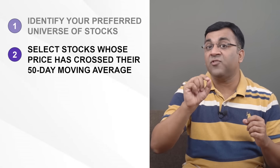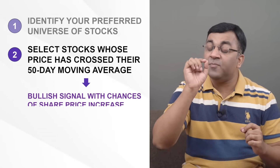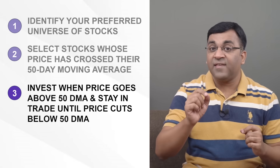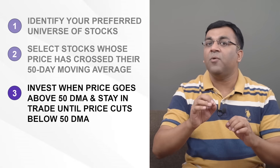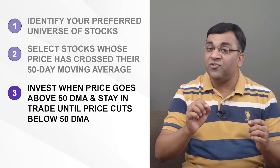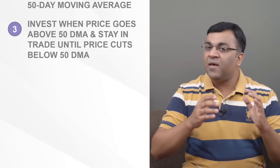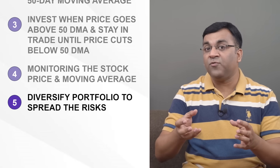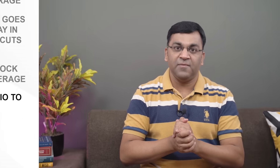Step two is to look for stocks whose price has just crossed their 50-day moving average — this can be extracted from any standard screener. The underlying premise is that these stocks are in an uptrend or have recently turned bullish, which can be interpreted as a sign of potential growth in the share price. Step three is to invest in these stocks when the price goes above the 50-day moving average and remain in the trade until the stock price cuts below the 50 DMA levels — investing upon the signal that the bullish period has started, and exiting upon the signal that the bearish period has commenced. Step four is to monitor the stocks regularly for their price and moving average. And finally, step five: it's important to diversify this portfolio, because everything has some element of speculation to it and no one can guarantee any future performance.